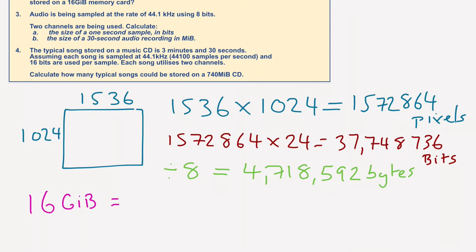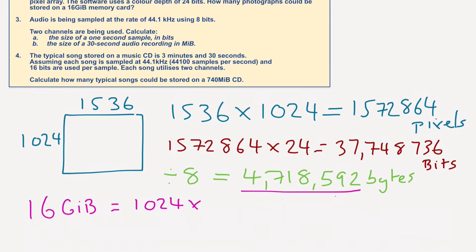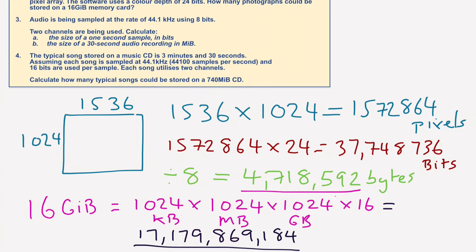We go 1024 multiplied by 1024. So we're going from bytes to, first of all, kilobytes, then to megabytes, and then to gigabytes. We need to times it again by 1024. And because we've got 16 of them, we're going to have a massive number to get 16 gigabytes. So 1024 multiplied by 1024 multiplied by 1024 multiplied by 16 equals 17,179,869,184. A massive number. That's 16 gigabytes in bytes.